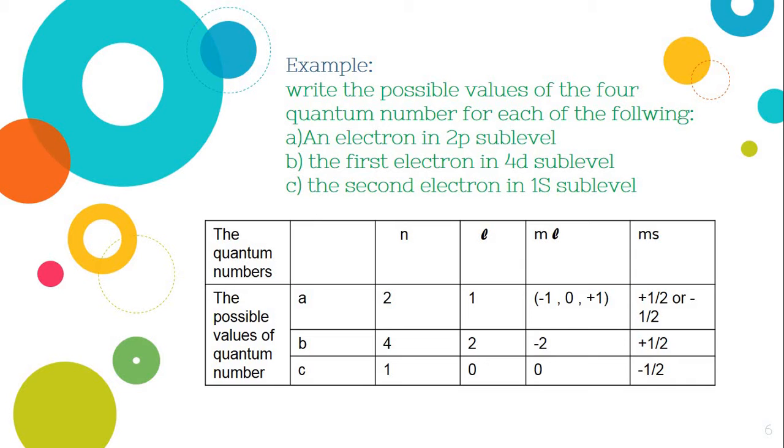Example: write the possible values of the four quantum numbers for each of the following. Number a, an electron in the 2p sublevel. Look at the table. The answer will be that this electron is found in the 2p sublevel. So its n will be equal to 2.